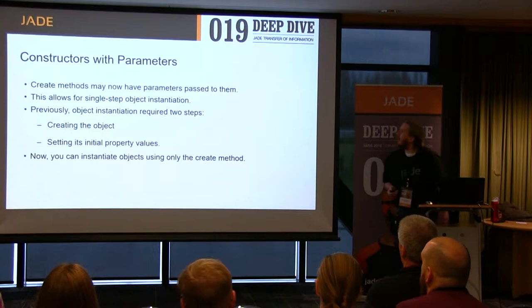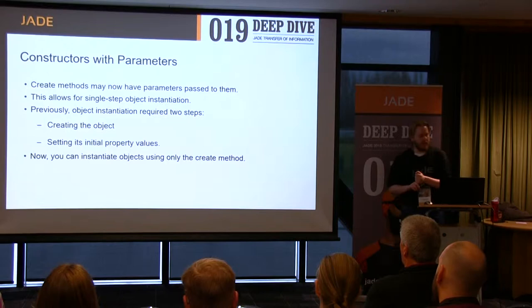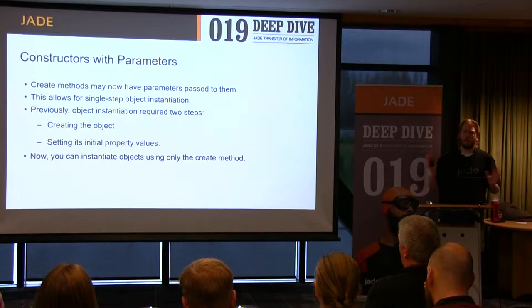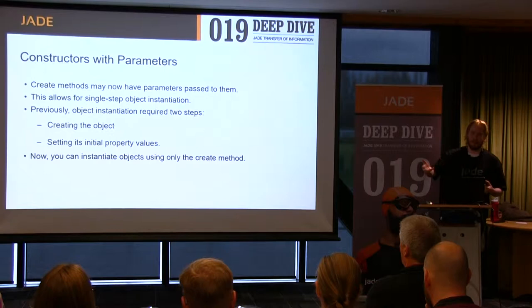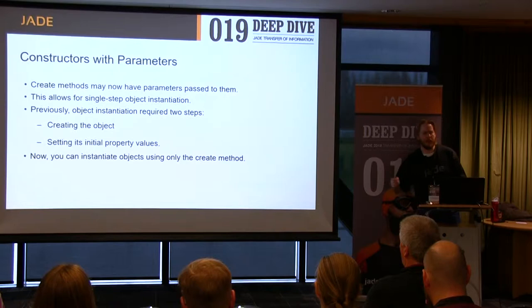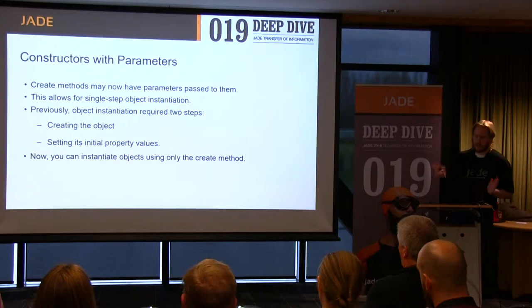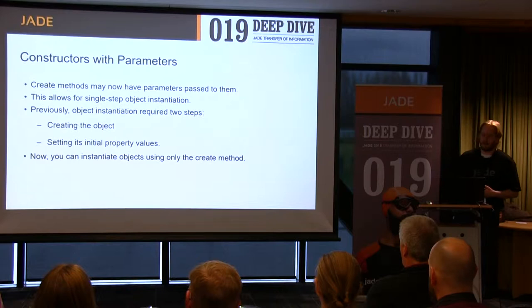First of all, create methods. Those are the methods that automatically get called whenever you create an object. Previously, you couldn't pass any parameters to create methods, so normally what you'd do if you're trying to instantiate an object — first you'd create the object and the create method would be automatically called, and then you'd have something like a set properties on create method where you'd set any initial properties you might need. The goal is to get those two steps down to one step, so with the new create method we can pass those initial properties straight into the create method and get single step object instantiation.